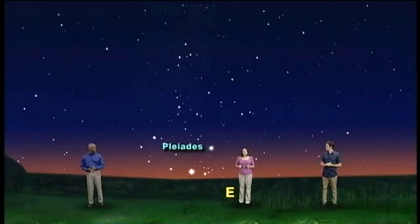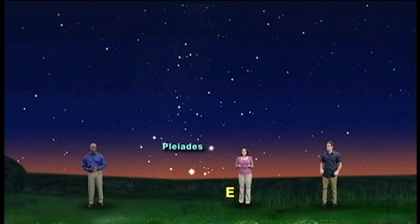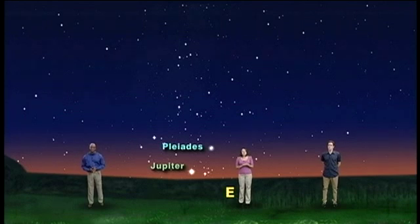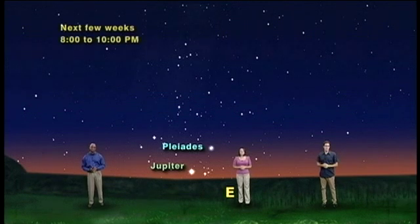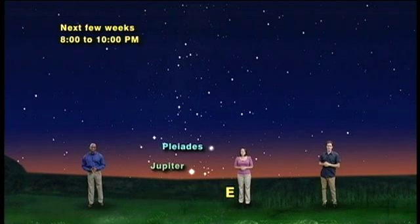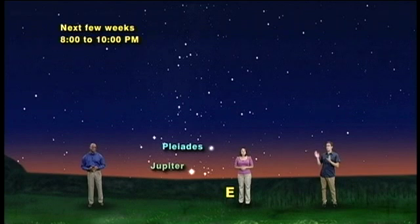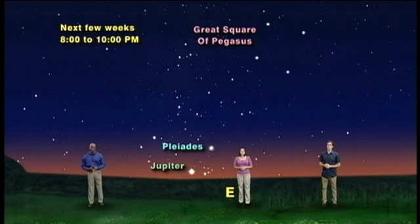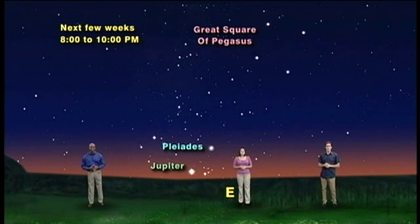Let's take a look at that other bright light below the Pleiades. It's not there every year — it's a wandering star, the giant planet Jupiter, and it just happens to be in this part of the sky this year. Next year at this time, it will be even farther east. So get outside some night the next few weeks between 8 and 10 p.m. Look east for the giant planet Jupiter, and above it the rising Pleiades, the seven sisters, and then look almost overhead for the great square of Pegasus, announcing that the stars of summer have turned to the stars of autumn, just as the leaves on Earth have turned to red and gold.